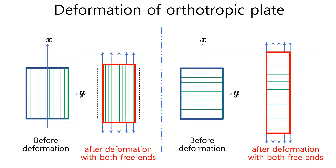The important characteristics of principal axes are: firstly, the normal stress applied to the plane perpendicular to the principal axes does not produce shear stress. And secondly, two stresses parallel to the two principal axes correspond to the maximum and minimum normal stresses, respectively. Any stress distribution with arbitrary axes can be described by stresses of the principal axes and the angle between the principal axes and those arbitrary axes. Therefore, the mechanical properties depend on the orientation of the axes at the corresponding point in the plane.